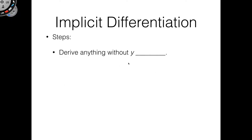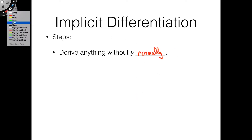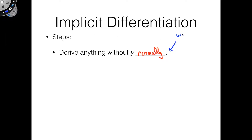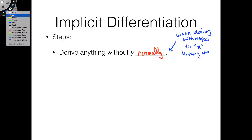Implicit differentiation really just involves a few steps. The algebra you'll eventually get can sometimes be annoying, but the calculus isn't that complicated. Here's how you do it: derive anything without y normally. The reason for this is that you're deriving with respect to x, so when deriving with respect to x, there's nothing new you need to do — it's the same stuff we've been doing with our other rules.